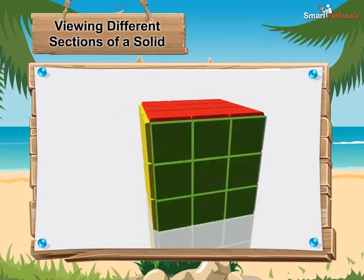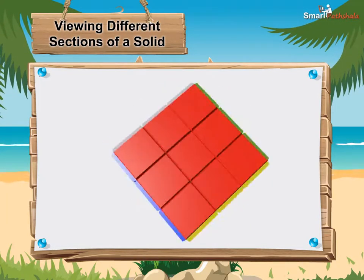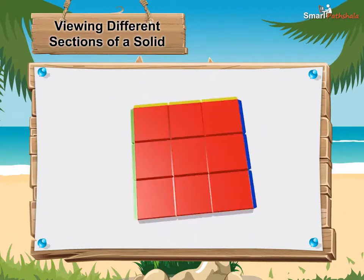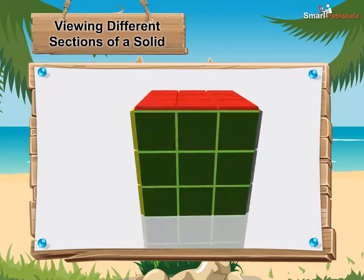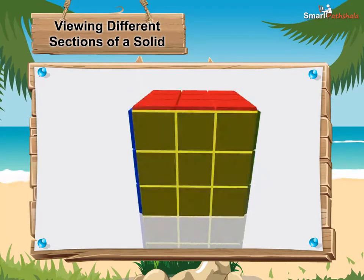Sections of a solid can be viewed in a number of ways. A solid can be viewed from different angles. Viewing a solid from the front, side and top are the three most common ways of viewing.